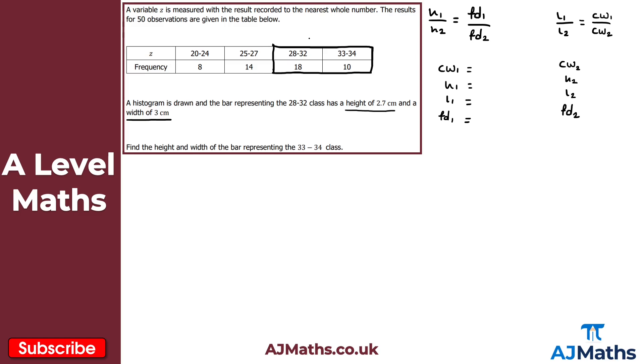So the class boundaries then, this would be 27.5 for the lower class boundary. And then for the upper class boundary, that would be 32.5. So my class width here is 32.5 minus 27.5, which gives me 5 there.